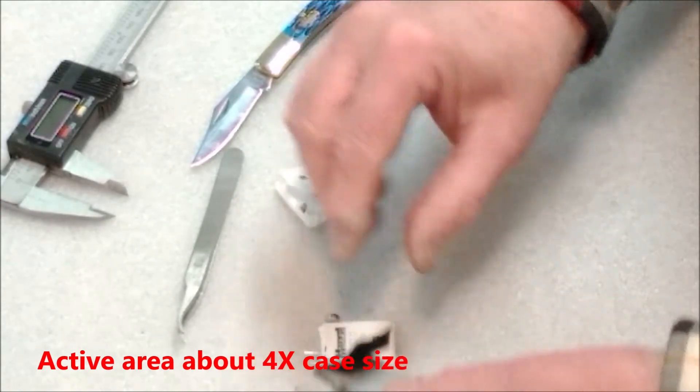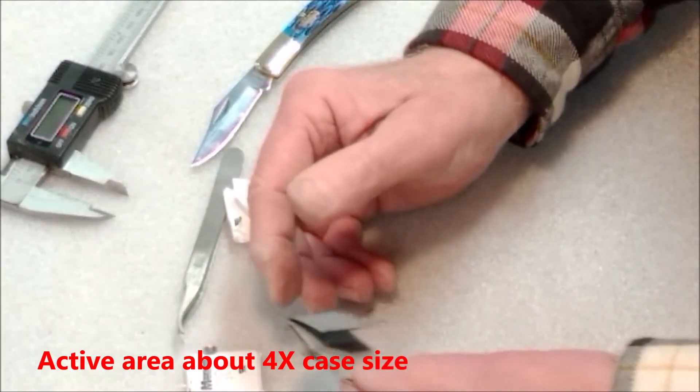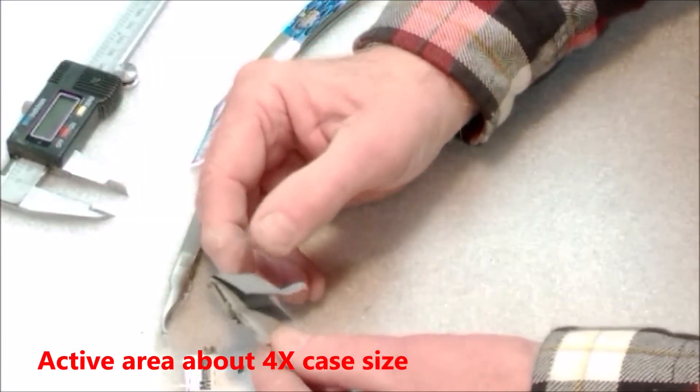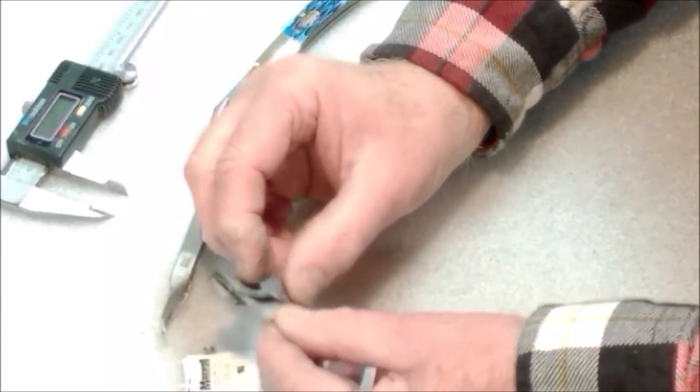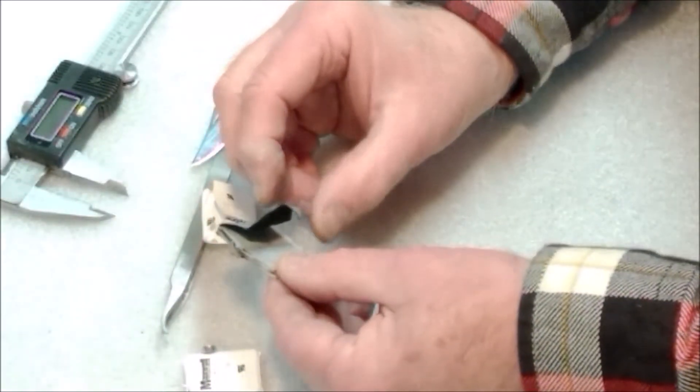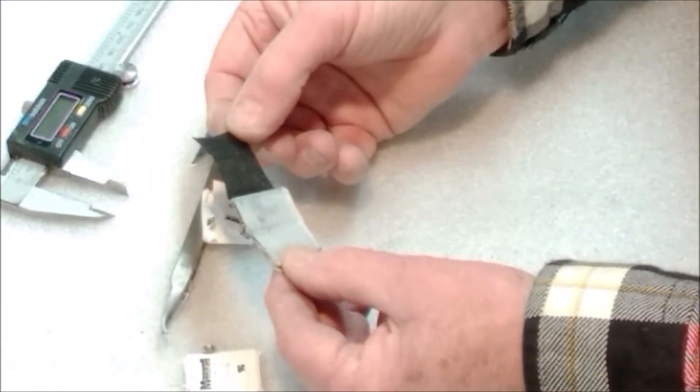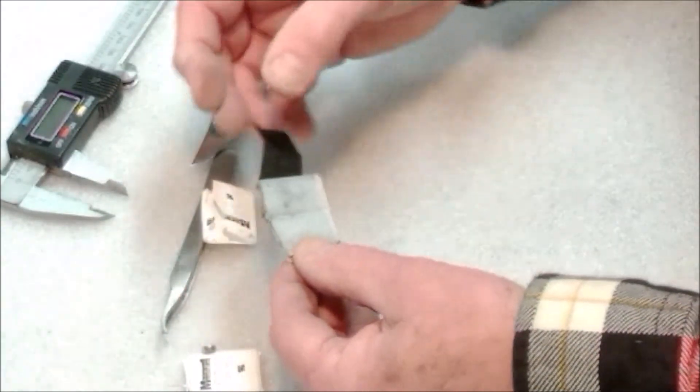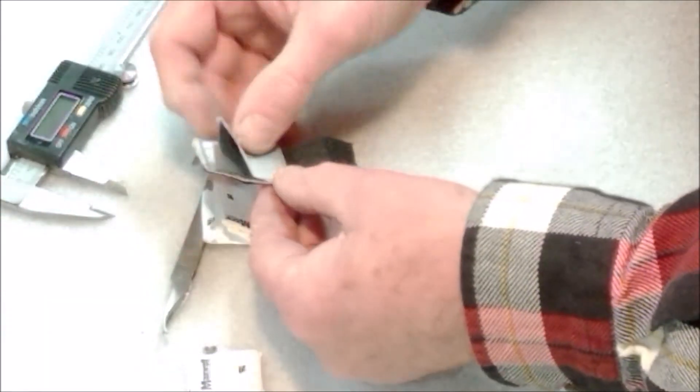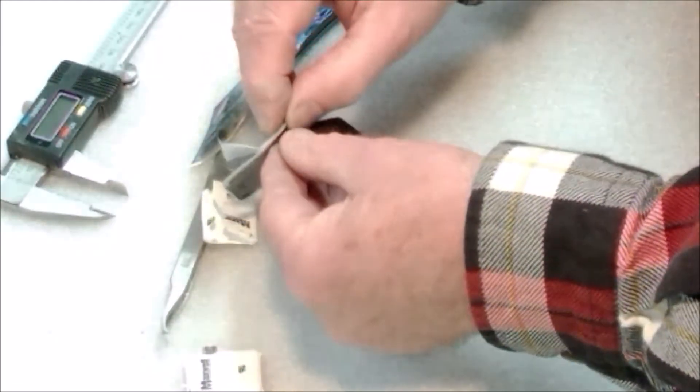Now if we, let's see, kind of delicately open up this cloth, I'm gonna guess we've got a carbon impregnated electrode there. We'll set that aside here.